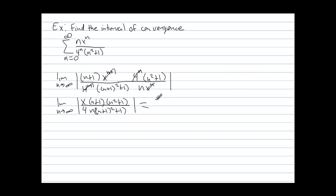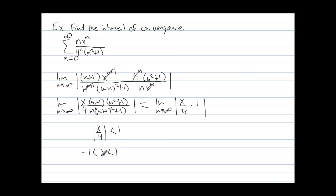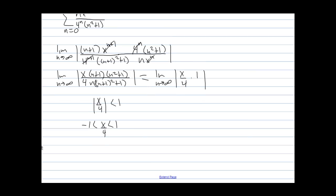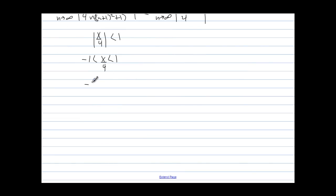That equals the limit as n approaches infinity of x over 4 times 1, because we have n cubed on top and n cubed on the bottom, and both coefficients are 1. So x over 4 needs to be less than 1 for the series to converge. We write negative 1 less than x over 4 less than 1, and multiplying everyone by 4, we get negative 4 less than x less than 4. That's the interval of convergence so far.